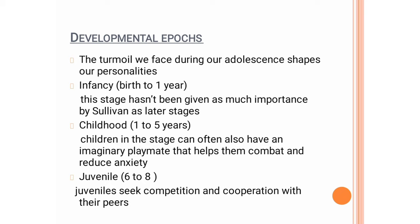Sullivan also elaborated on the development of human personality in stages termed as epochs. He considered adolescence to be extremely important to human personality development, as the turmoil we face during adolescence shapes our personalities. The first epoch is infancy — birth to one year. This stage hasn't been given as much importance by Sullivan as later stages. Second is childhood — one to five years. Children in this stage can often have an imaginary playmate that helps them combat and reduce anxiety.